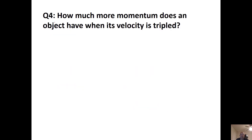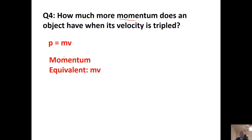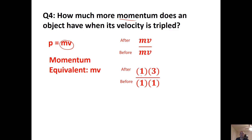How much more momentum does an object have when its velocity is tripled? Set up an after-over-before ratio using p = mv. Mass is the same — nothing was said about it. The velocity is 3 times. So the answer is 3 times its original value.